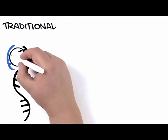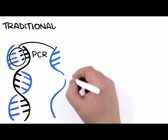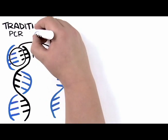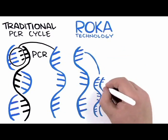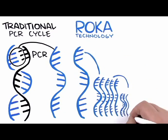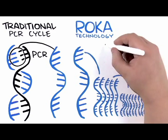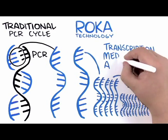While traditional molecular assays use PCR to amplify signal, which is only capable of a doubling per cycle, Roka technology rapidly amplifies the captured target with a billion-fold explosion of signal through a process known as TMA, transcription-mediated amplification.